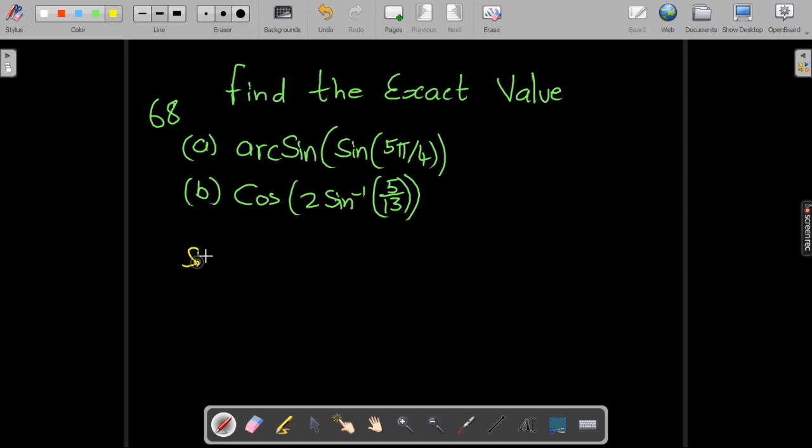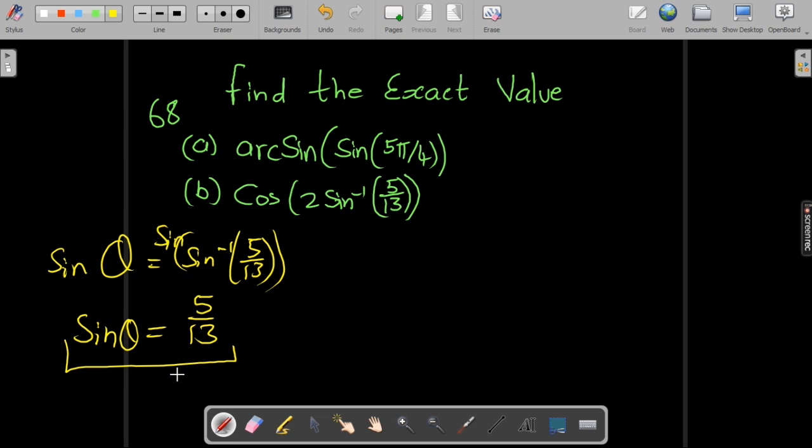We have arcsin of 5 over 13. We can imagine this as an angle, let's say theta. This tells you that if you applied sine on both sides, that cancels the effect of the arcsine and you just have 5 over 13. But you do have sine on this side.